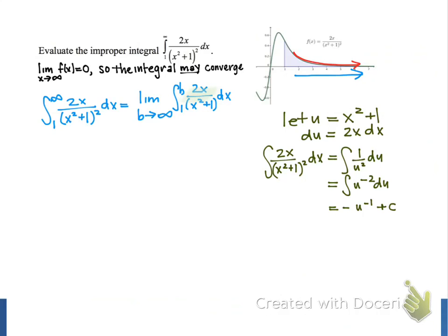The antiderivative of u to the negative 2 is negative u to the negative 1 power plus c, which we can rewrite as negative 1 over u plus c.